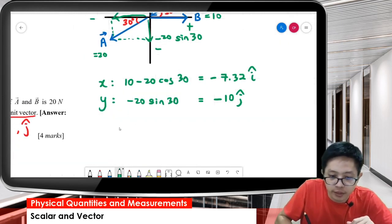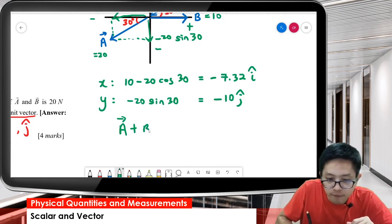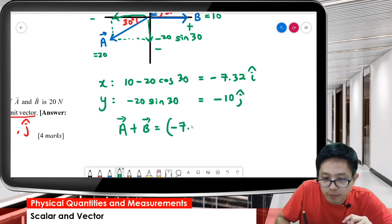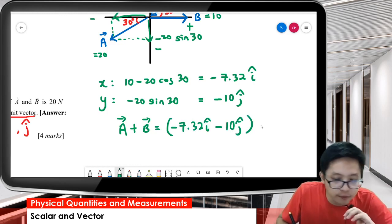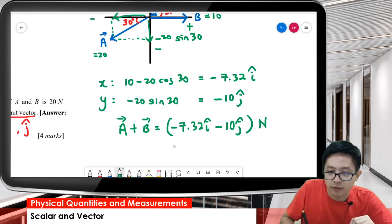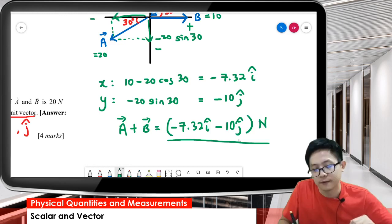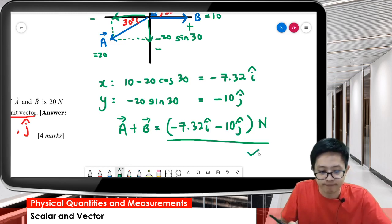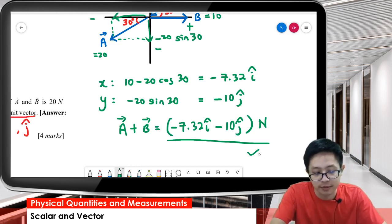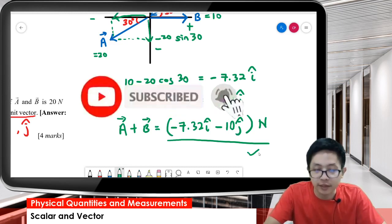So in the end, A plus B is equal to negative 7.32 i minus 10 j Newton. That's our answer. This is the x component and this is the y component in unit vector form. If you like my video, please subscribe. Thank you.